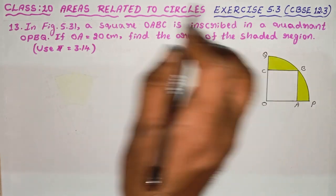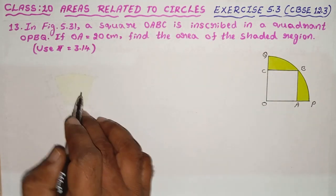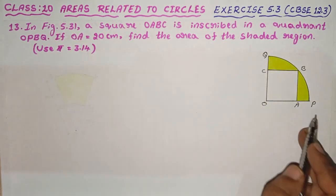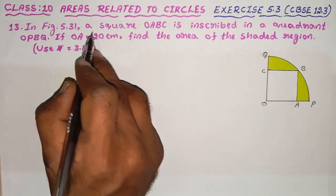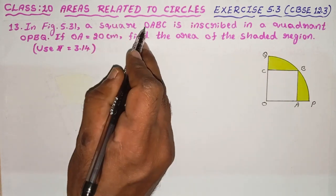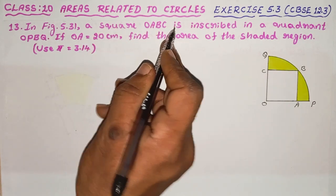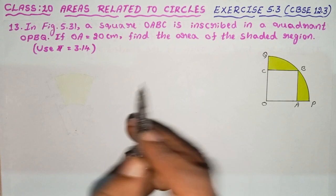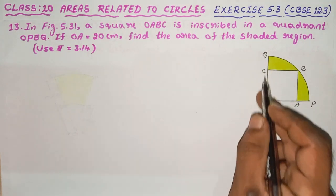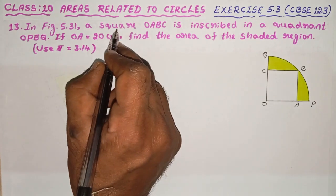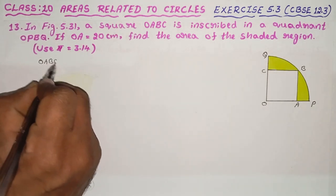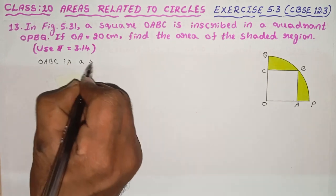First, I am going to explain the question. In figure 5.31, this figure — a square OABC is inscribed in a quadrant. The vertices are O, A, B, C and it forms a square. O, A, B, C is a square.